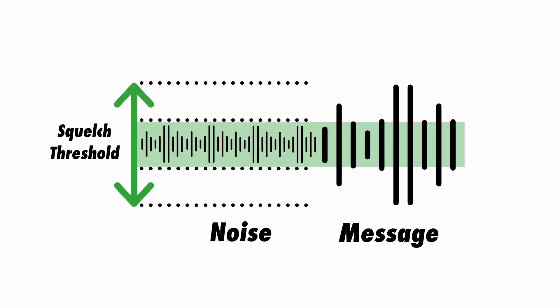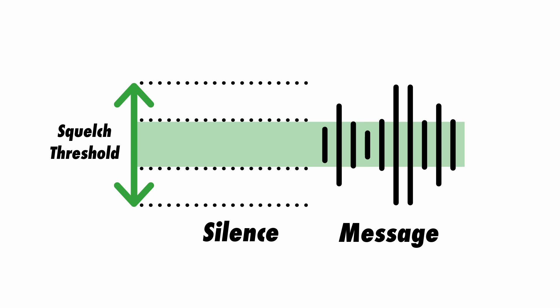Squelch is essentially a noise gate — it says everything below this noise level I will not transmit. It comes from the classic situation where you're using a wireless microphone on a noisy channel, but the talent turns the transmitter off. Suddenly you get a rush of noise through your receiver, because it's looking for signal and picking up static bursts. The squelch helps with that noise floor — anything below the threshold just gets ignored and won't be transmitted.